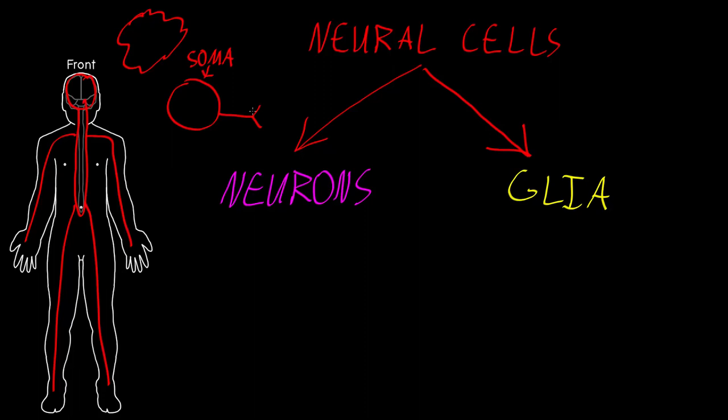And then processes, or extensions, that come off the soma. And these processes are attached to the soma, but they may have many different shapes and sizes to perform different sorts of functions. Now, the function of neurons is to process and transmit information.